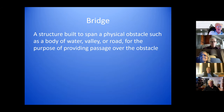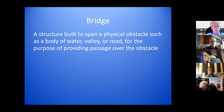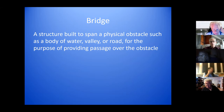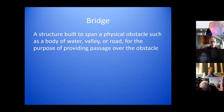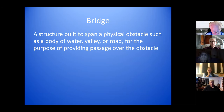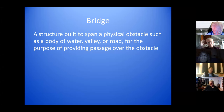So how do we define a bridge? It's a structure built to span a physical obstacle, such as a body of water, a valley, or a road, and the purpose is to provide passage over the obstacle. For that reason, things like tramways and cable cars are really not bridges. The passage over the bridge could be people, vehicles like cars, buses, trucks, airplanes, railroads, water, sewer lines, power lines, or animals.